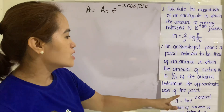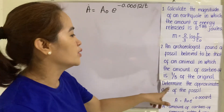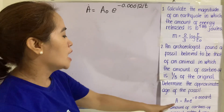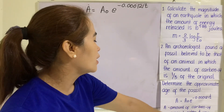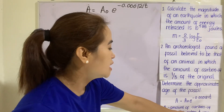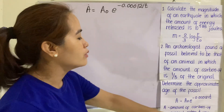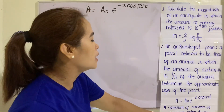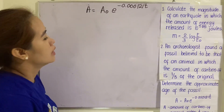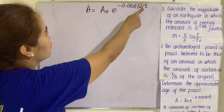We are asked to find the value of T, the age of the fossil. Here, A is the amount of carbon-14 present after T years, and A sub-zero is the amount of carbon-14 present at T equals 0 years. It says one-fifth of the original, so we are looking for T.